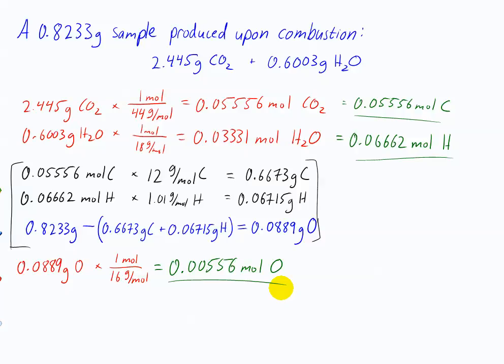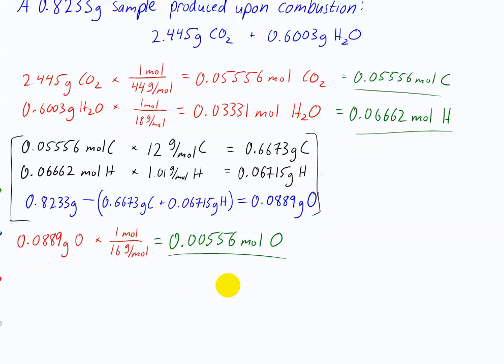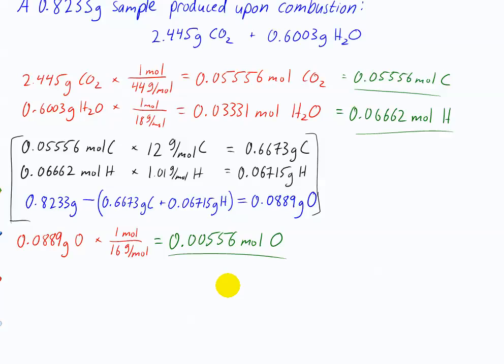So now we have the three moles, which is what we need to actually figure out this formula. So you divide them all by the smallest one, which in this case is the oxygen, 0.00556. And you get, in this case, very even numbers. 0.05556 divided by 0.0556 is about 10, so that means it's going to be C10.